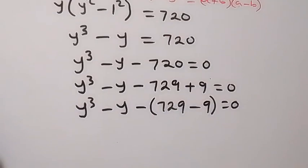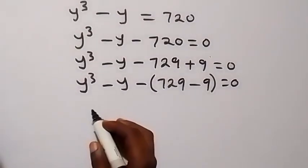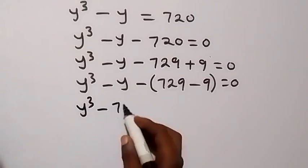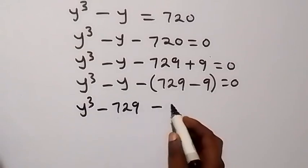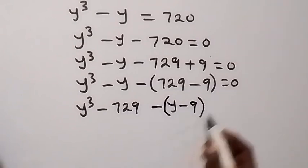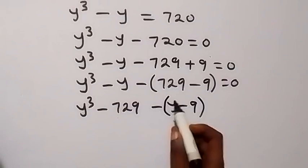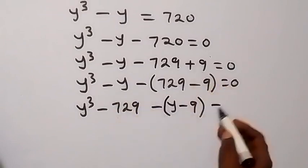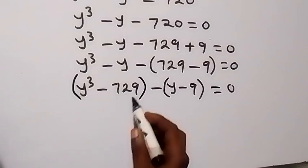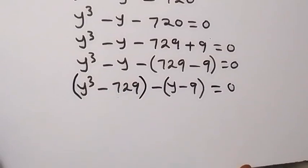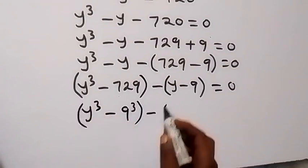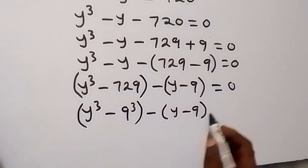Grouping the terms together: (y³ - 729) minus (y - 9) equals 0. Recognizing that 729 = 9³, we now have (y³ - 9³) minus (y - 9) equals 0.